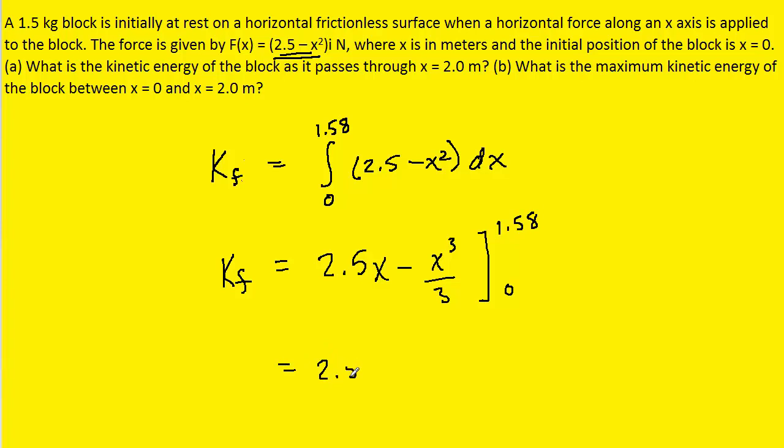As before, we'll plug in the upper limit first, which is the 1.58. And then we technically have to plug in the lower limit next, which is 0. But like we said earlier, when we plug in 0, that entire quantity just becomes 0. So we can pick up our calculators and now type this in. And when we do that, we get a value of about 2.6 joules. So this would be the correct answer for the maximum kinetic energy between 0 and 2 meters.